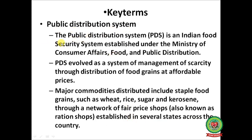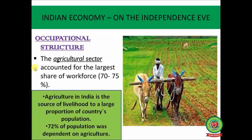Next is the Public Distribution System, or PDS. The Public Distribution System is an Indian food security system established under the Ministry of Consumer Affairs, Food and Public Distribution. It evolved as a system of managing scarcity through distribution of food grains at affordable prices. Major commodities distributed include staple food grains such as wheat, rice, sugar, and kerosene through a network of fair price shops, also known as ration shops.